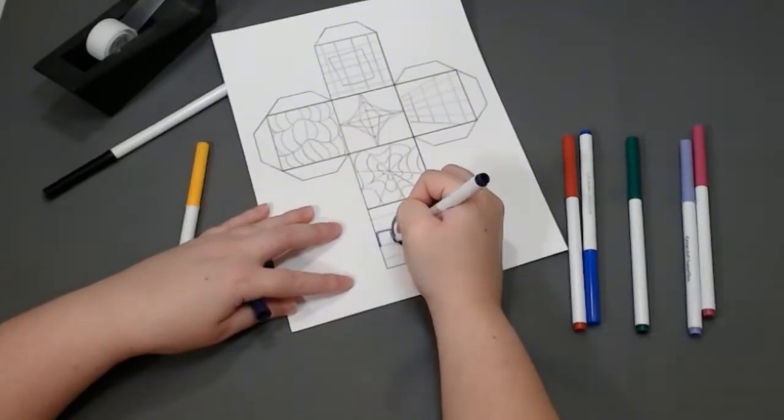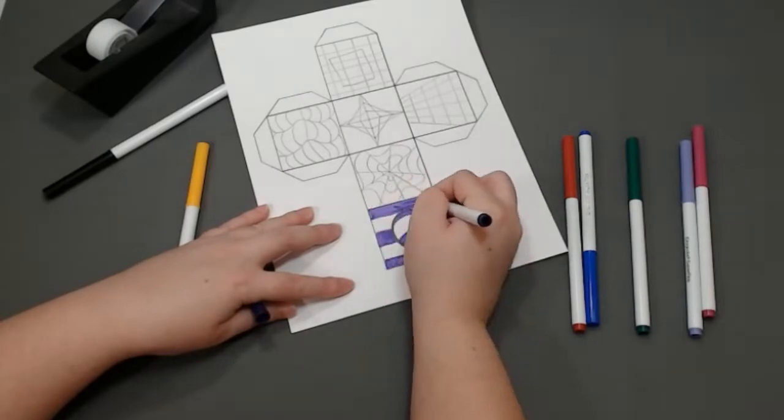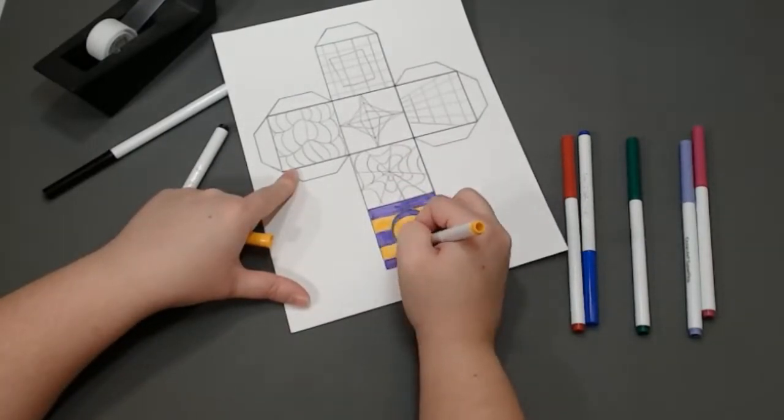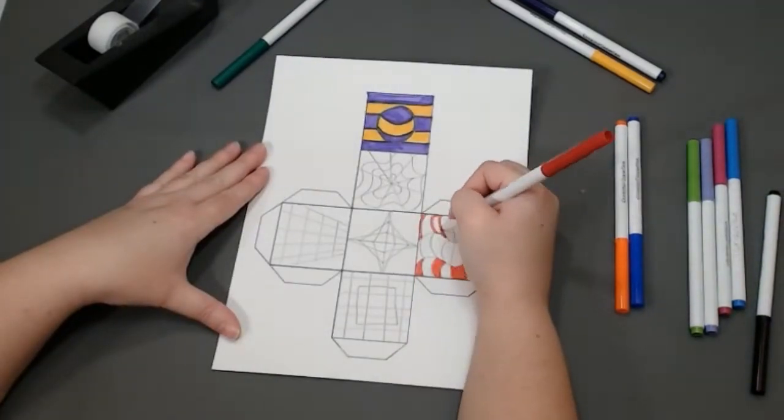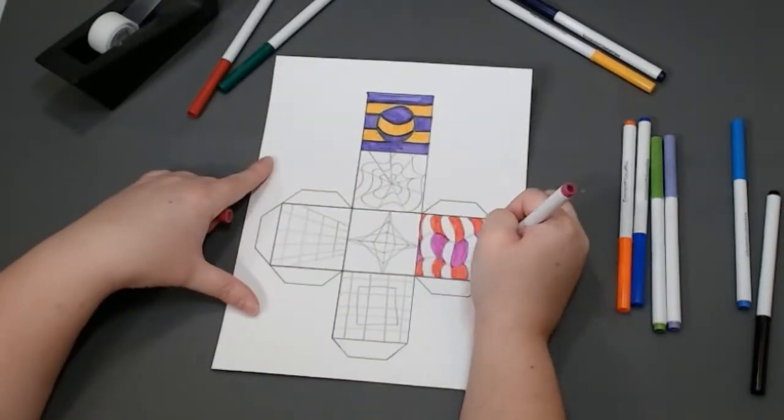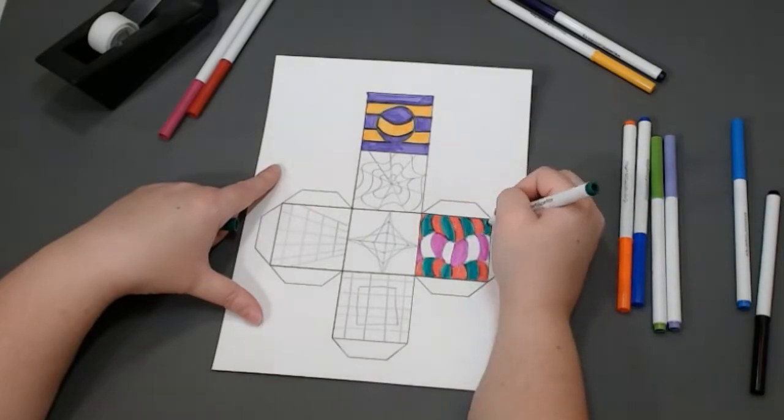Op art works best with contrasting colors, like black on white, yellow with purple, green with red, and blue with orange. The contrasting colors make each other brighter to our eyes. The contrast can also be done with warm next to cool colors.